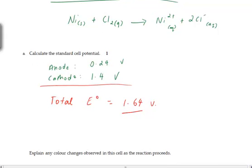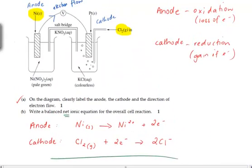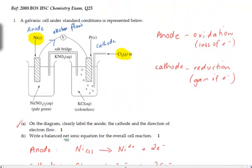Now the last question is one based on a written response. So explain any colour changes observed in this cell as the reaction proceeds. Going back up to look at our situation we've got here, the colour change that will occur will be between or among the two aqueous solutions. You'll observe that in the first one, nickel nitrate solution produces a pale green colour, potassium chloride produces a colourless solution.